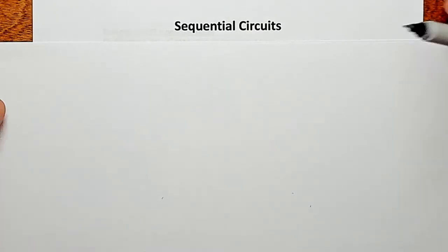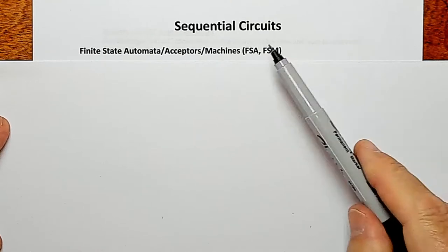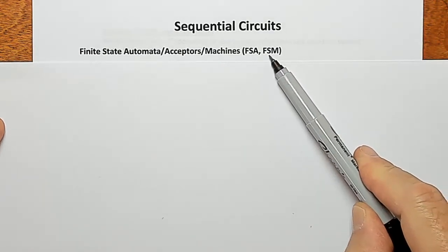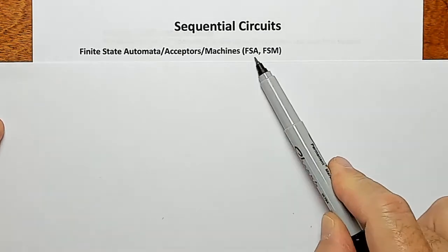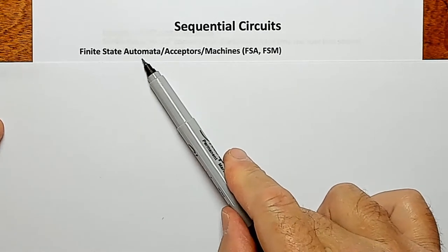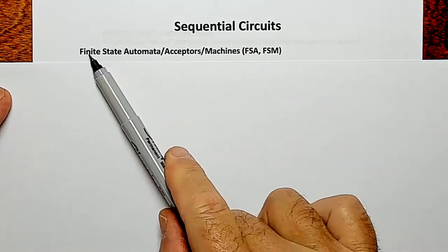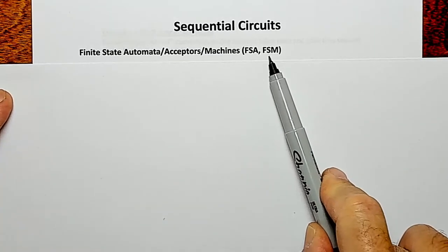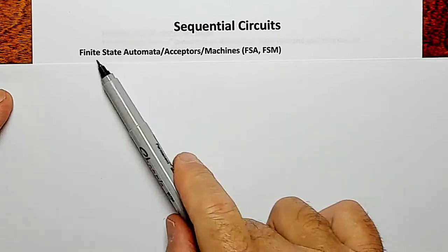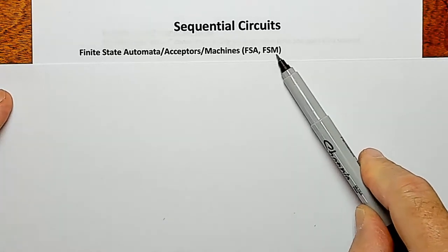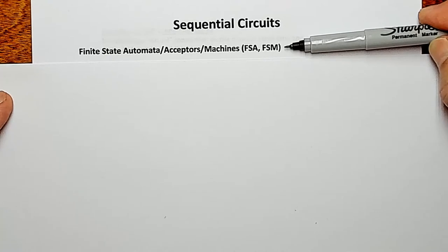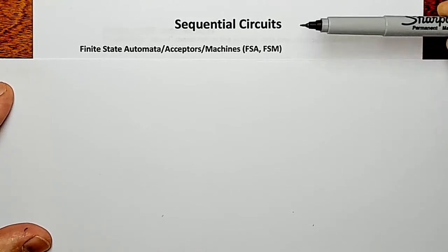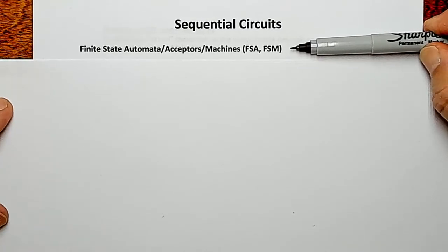Welcome back. Let's talk about sequential circuits. We have the abbreviations FSA and FSM. FSA stands for Finite State Automata, and sometimes it stands for Finite State Acceptor. We also have FSM, which stands for Finite State Machine. These things are almost exactly the same thing.